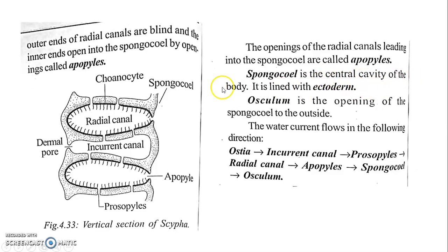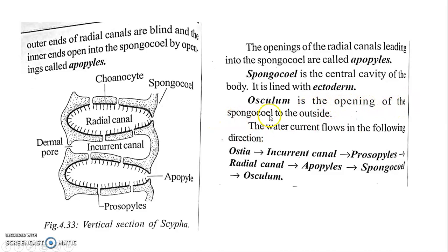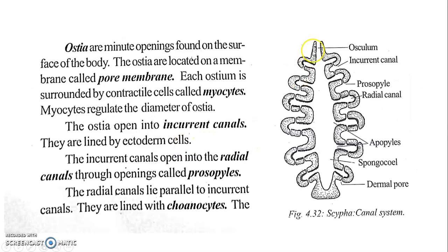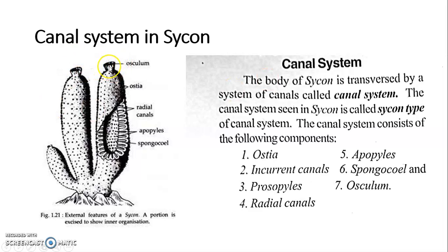The spongocoel is the central cavity of the body. It is lined with endoderm, also called pinacoderm or choanoderm. There is also the Osculum — it is a large opening. It is the opening of the spongocoel to the outside.